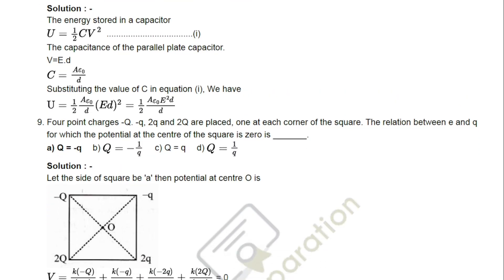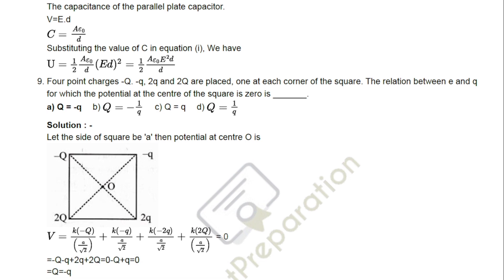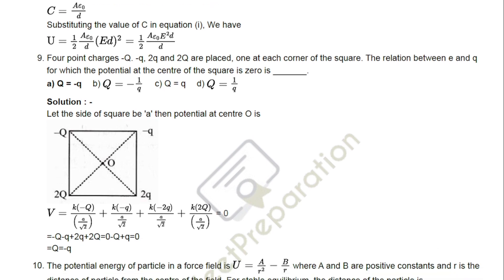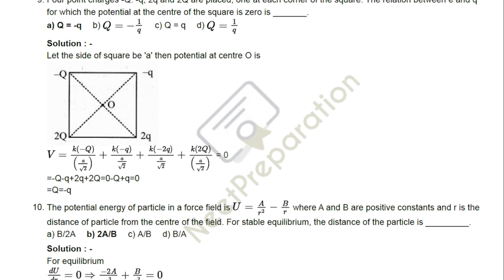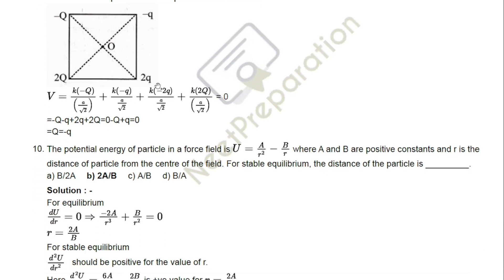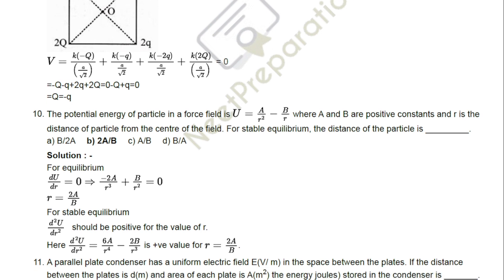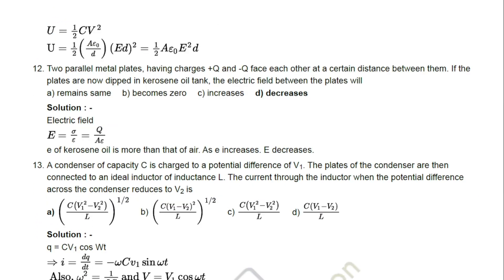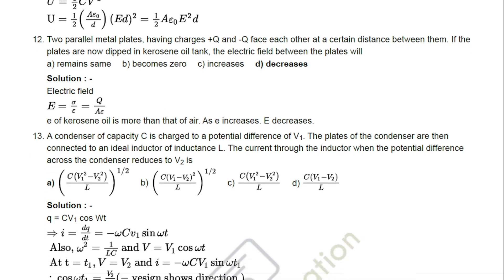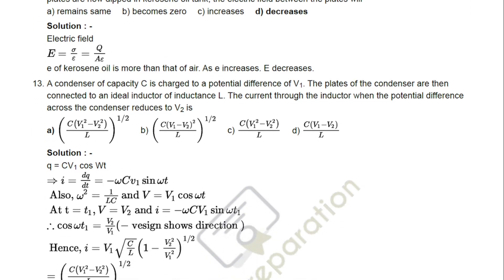For example, in Physics Section A, 35 questions will be asked. You have to answer all 35 questions. In Section B, 15 questions will be asked, you just answer 10 questions alone. Like this are the other 3 subjects: Chemistry, Zoology and Botany. Each correct answer, you will get 4 marks. Totally 180 questions, 180 into 4, 720 marks exam will be conducted.